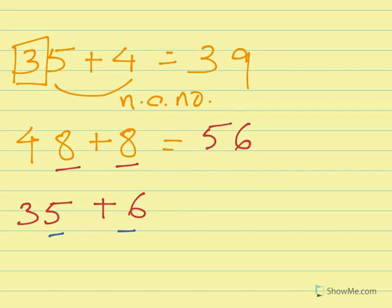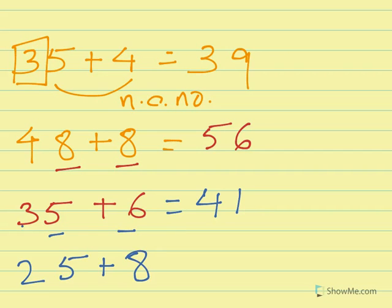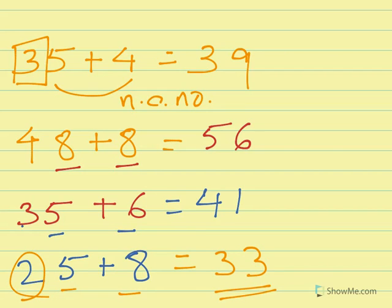Next, 35 plus 6: 5 plus 6 is a carrying number, so 3 increases to 4. The n number of 5 plus 6 is 1, as 5 plus 6 is 11. Answer is 41. Another one: 25 plus 8 — 5 plus 8 is a carrying number, so 2 increases to 3. The n number of 5 plus 8 is 3. Answer is 33.